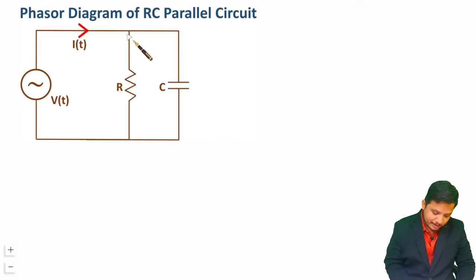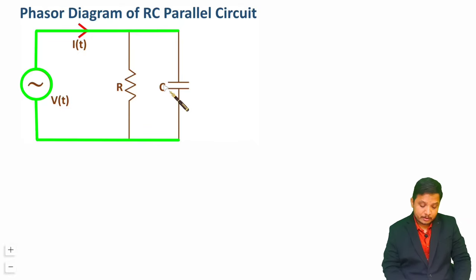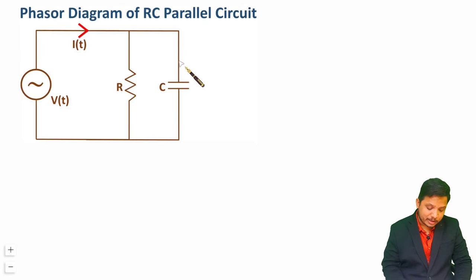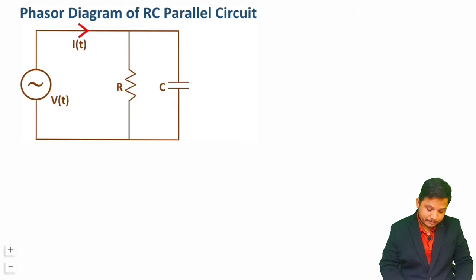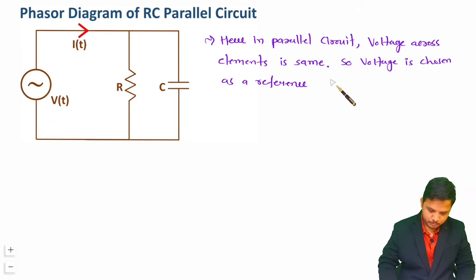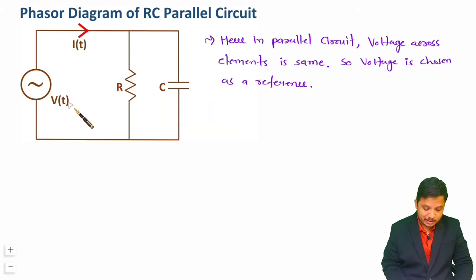In this circuit, R and C are connected in parallel and voltage is connected across the RC parallel circuit. Since elements are connected in parallel, voltage across R and voltage across C will be the same. So we consider voltage as a reference for the phasor diagram of the RC parallel circuit. For parallel connection we consider voltage as reference, whereas for series connection we should consider current as reference.